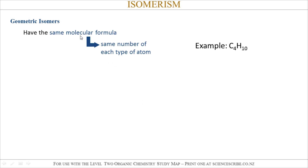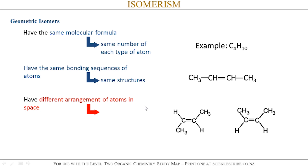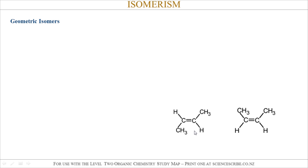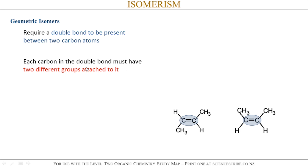Geometric isomers still have the same molecular formula. They have the same bonding sequence essentially, but the arrangement of atoms in space is going to be different. For geometric isomers to occur, you must have a double bond between two carbon atoms, as shown there. Each carbon atom must also have two different groups attached to it. In this example, I've got this carbon atom with two different groups, and on my other carbon atom, there are also two different groups attached to it.